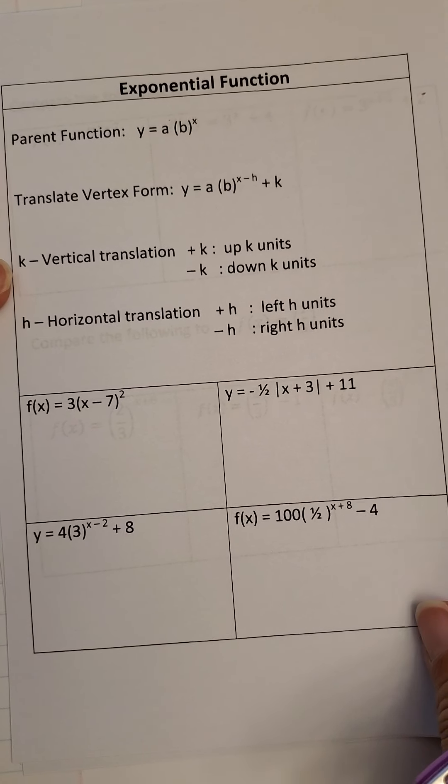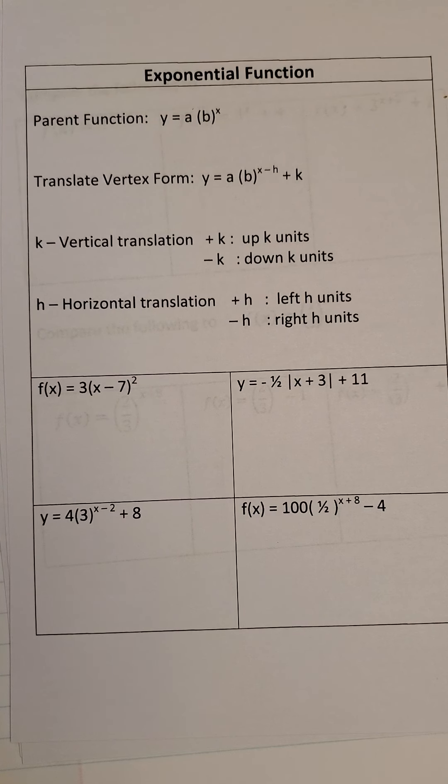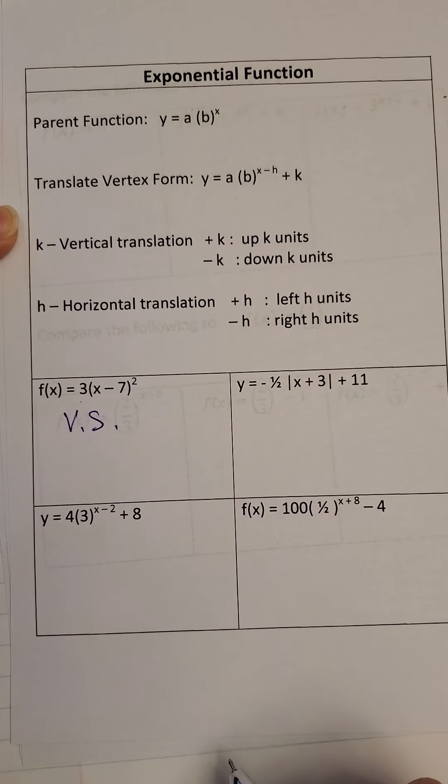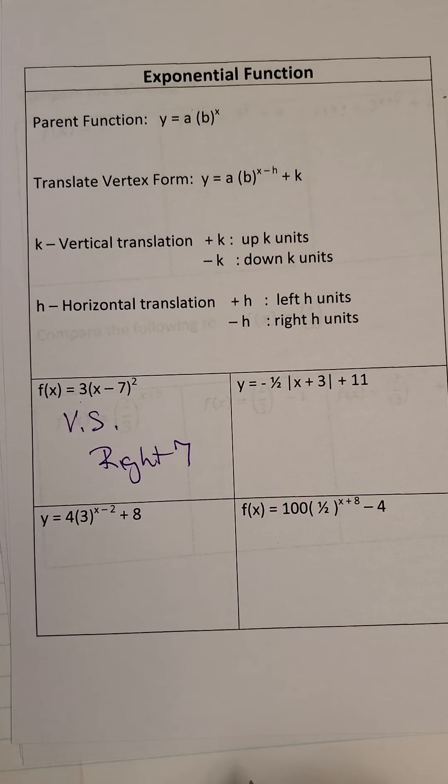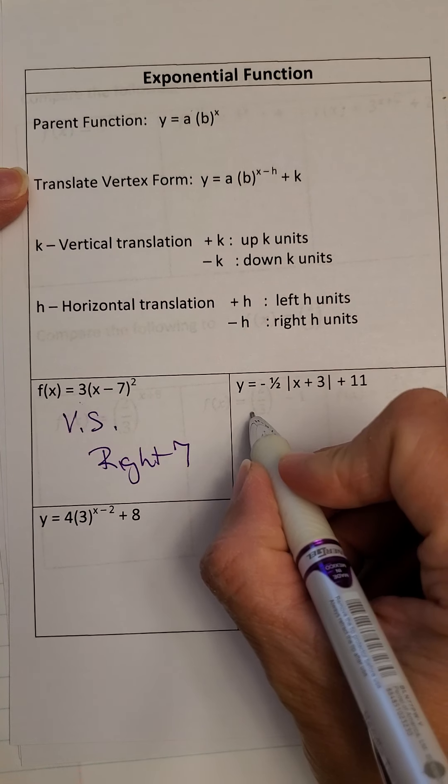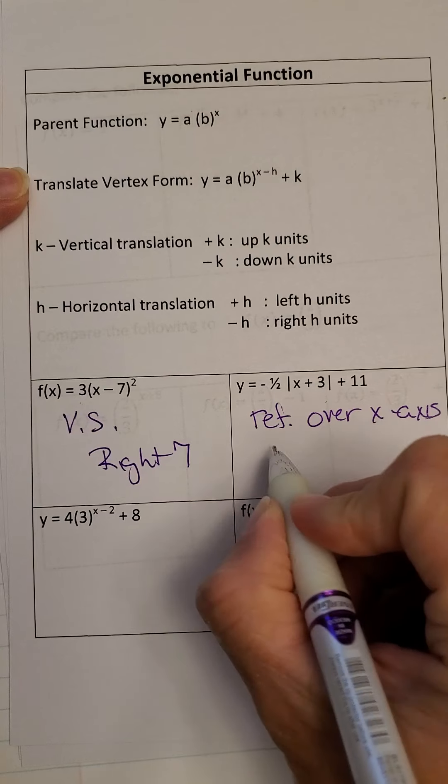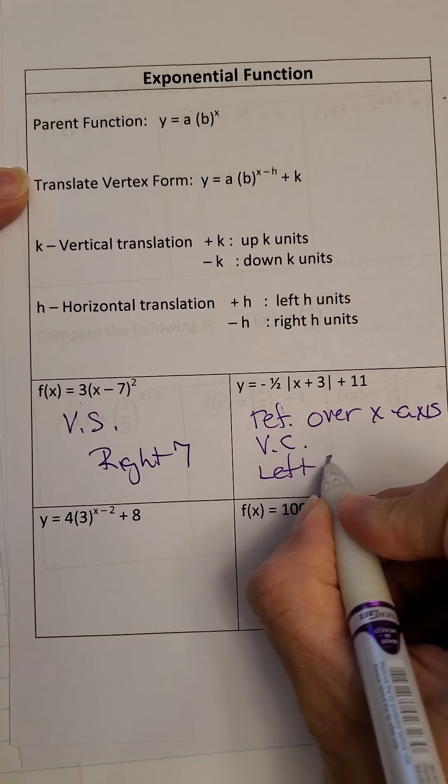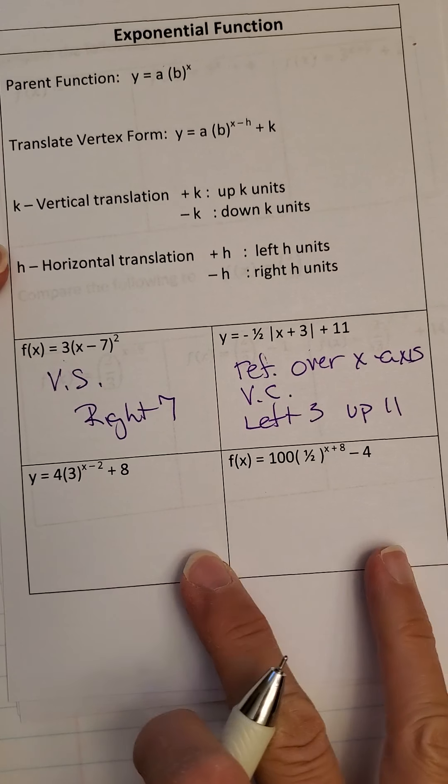Same kind of thing. So we're going to just go through these, and maybe you can pause and look at these four examples, and then come back and see if you got them right. Because we're going to say how is this different than what we started with if we started with the parent function. So in this one, 3 tells us it's vertically stretched. The minus 7 tells us it moved right 7. It's with the x, x is always right or left. This is an absolute value function. The negative tells us it's reflected over the x-axis. The 1/2 tells us it's vertically compressed. The positive 3 says left 3, and the 11 says up 11.